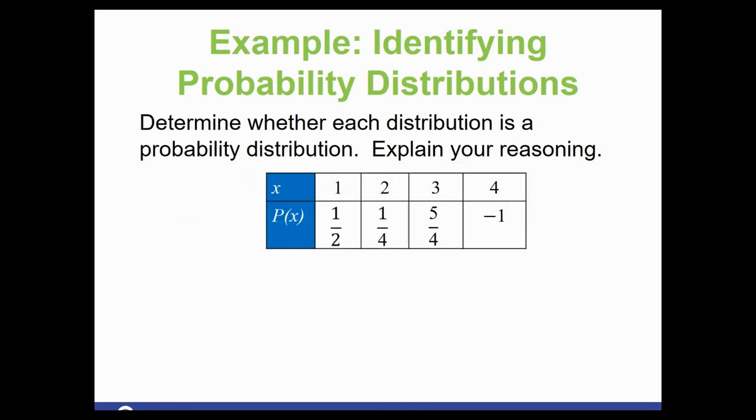Determine whether each distribution is a probability distribution. This one is fractions. Still fine. One half is between 0 and 1. One fourth is between 0 and 1. Five fourths is not between 0 and 1. And neither is negative 1. Both of those are not in the correct range. So we're done right here. This is not a probability distribution.